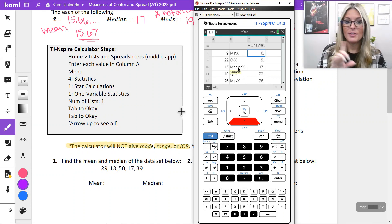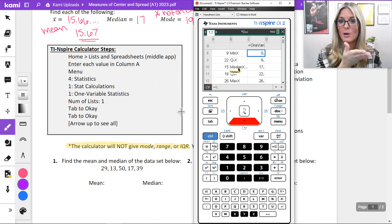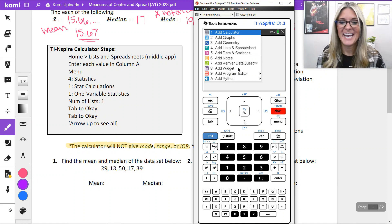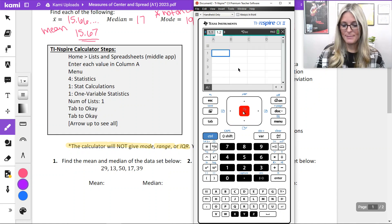So let's try those calculator steps again with the examples below one and two. We're going to find the mean and the median from the data set. If you want to do it by hand, you're more than welcome to do that. Mean, you would add them all up and divide by the number of values. Median, you would need to list them in order, least to greatest, and find the center value. I'm going to use the calculator just to model. I'm going to open up a new tab on my screen. Control doc for this time. Adding list and spreadsheets. We're going to type in 29, enter 13, enter 50, 17 and 39.